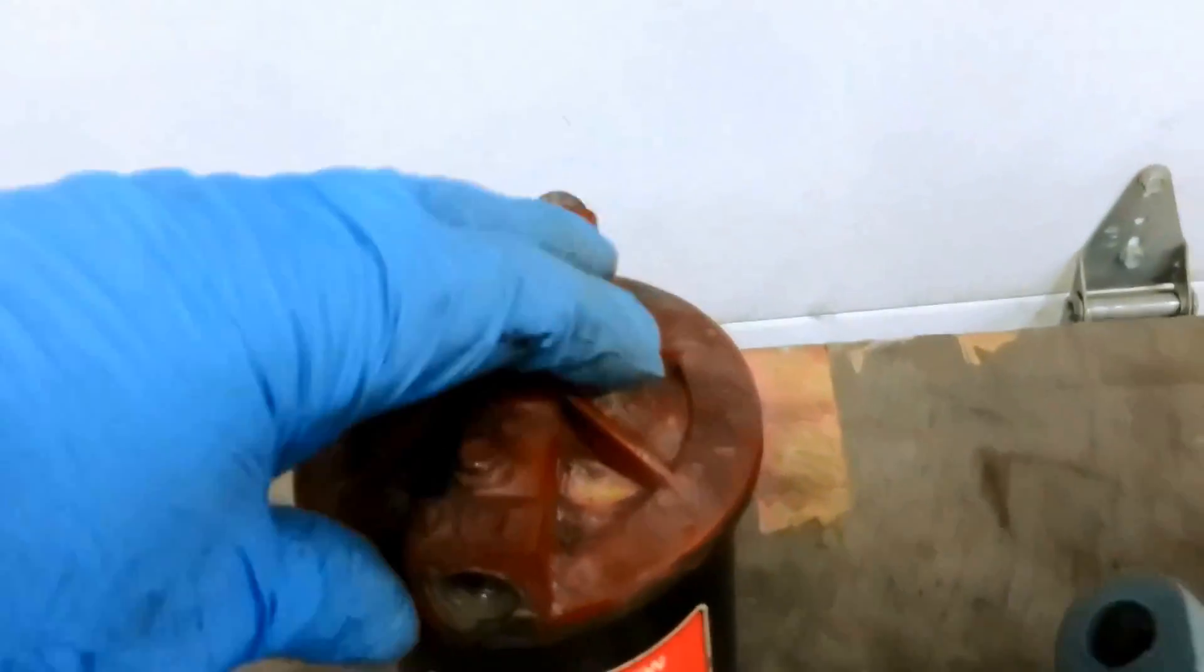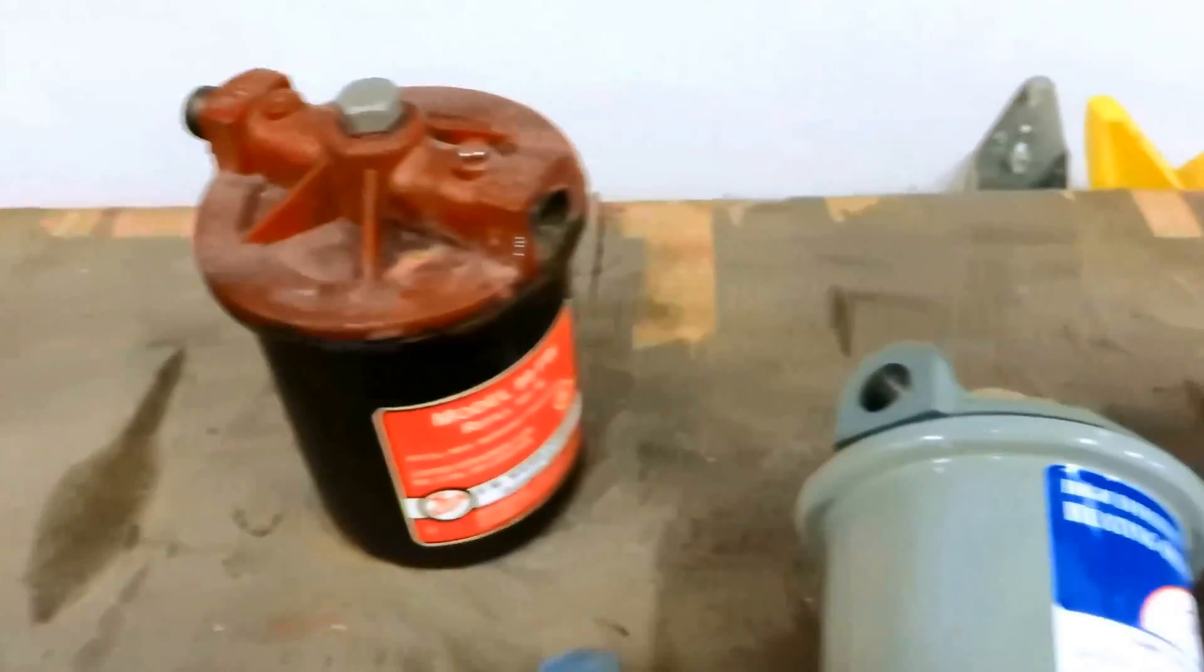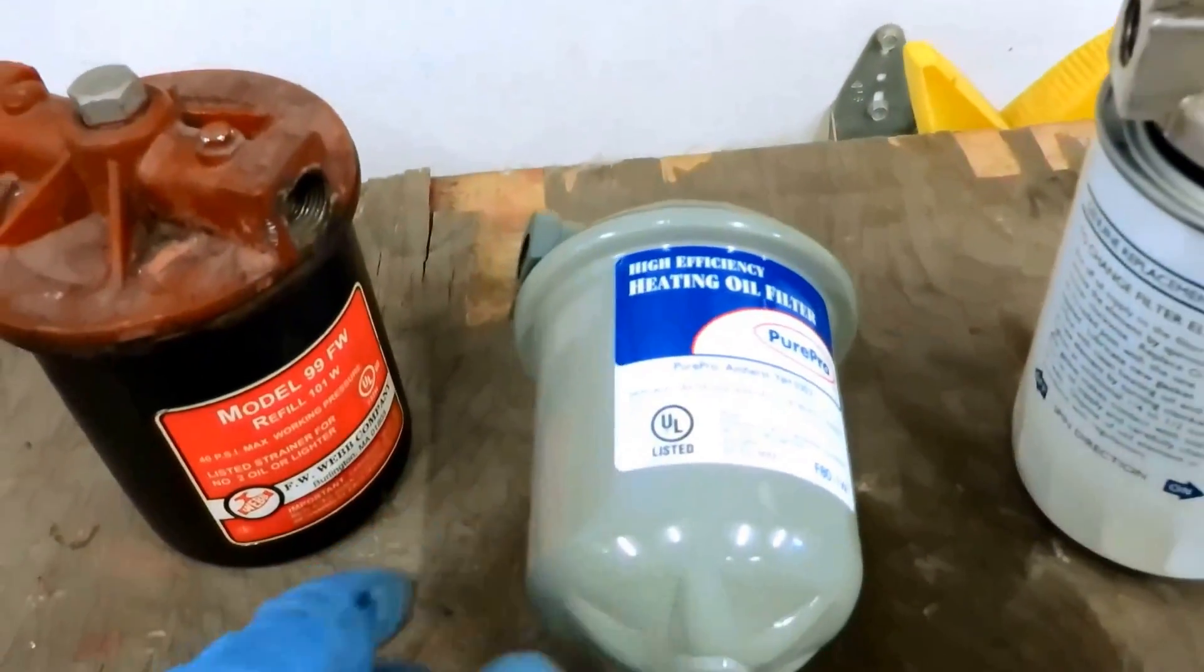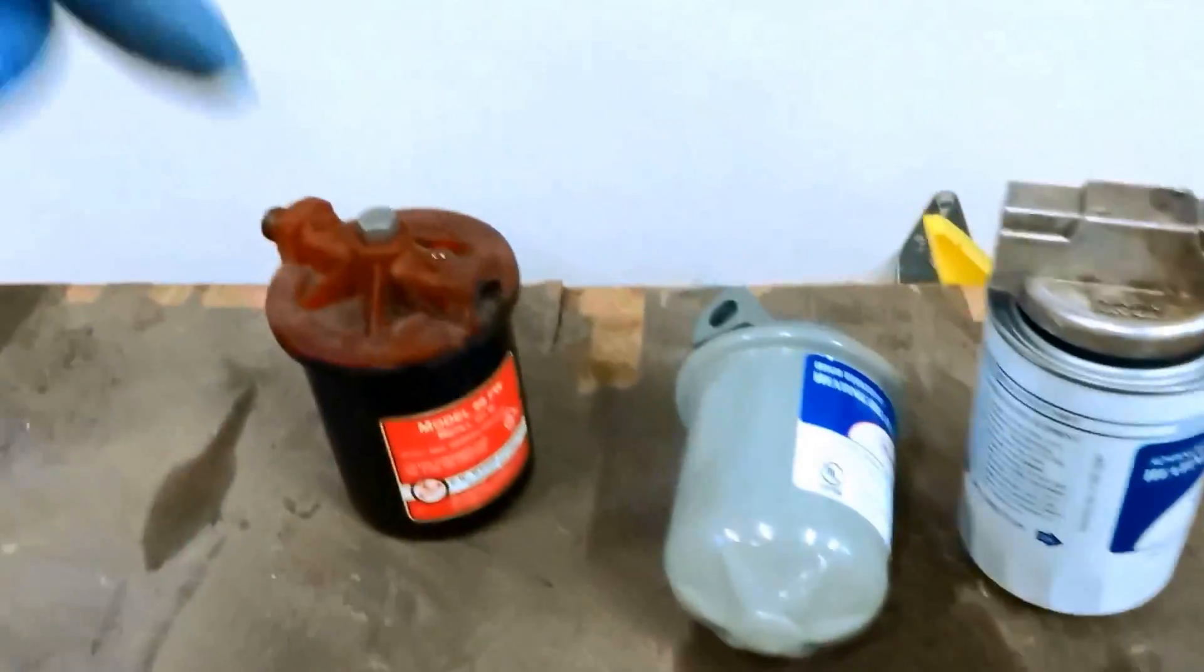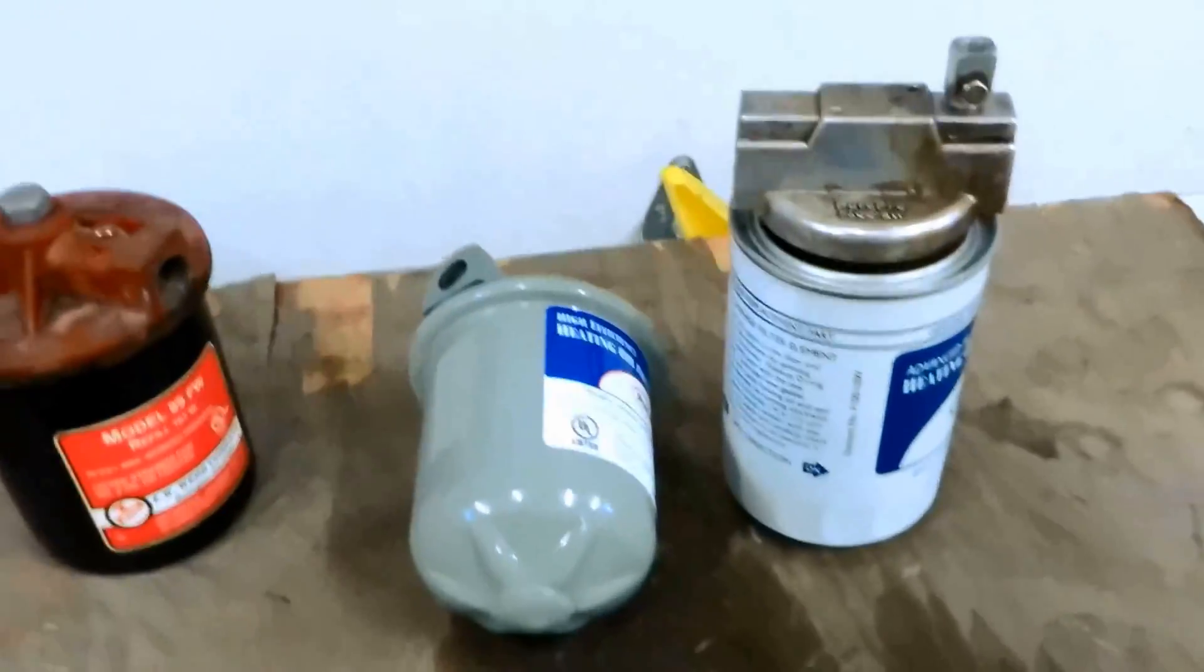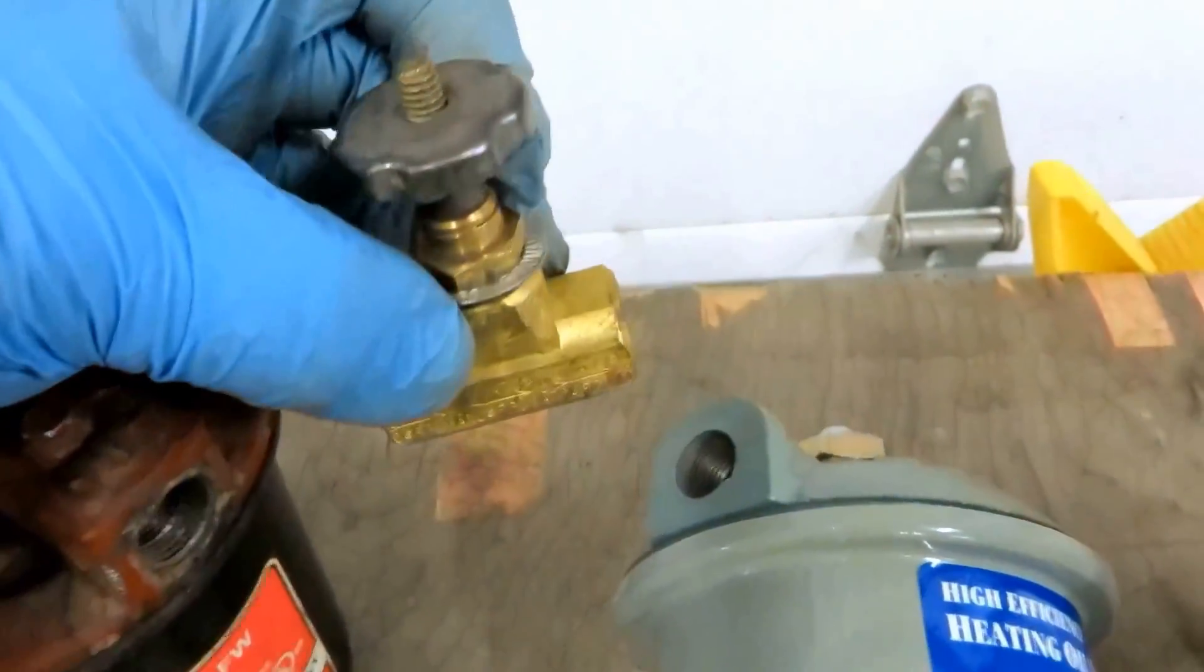They do make a general which is a smaller one, very common also. I just don't have one here. Basically, these filters would be at the tank. If you're coming off the bottom of the tank, you would have the filter and you have a firematic at the tank.